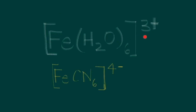Let's look first at this complex: Fe(H₂O)₆ — six water ligands associated with the central atom — with an overall charge of three positive. This overall charge can also be referred to as the overall oxidation state of the transition element complex. Since the overall oxidation state of the water ligand is zero, the three plus charge must be associated with the Fe, so we can deduce that the oxidation state of this iron central atom is positive three.